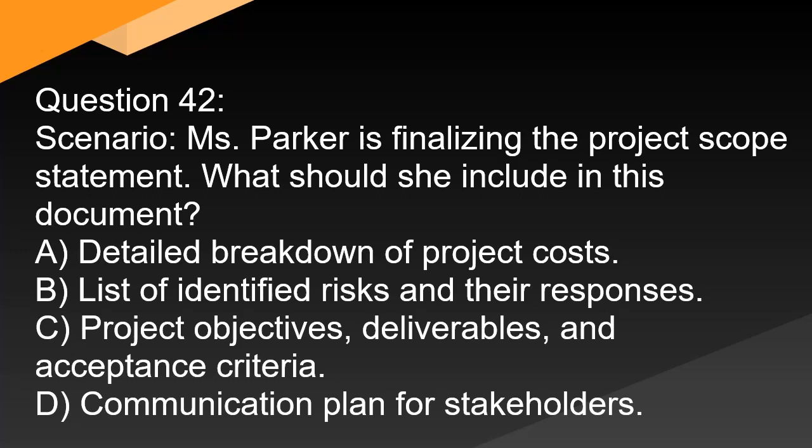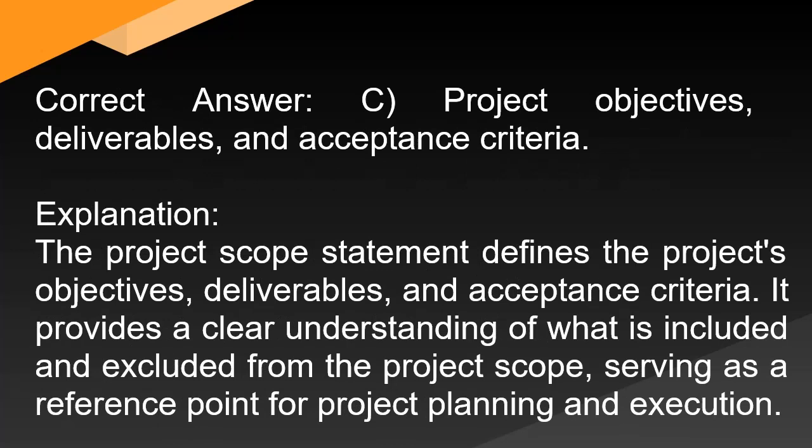Question 42: Ms. Parker is finalizing the project scope statement. What should she include in this document? A. Detailed breakdown of project costs. B. List of identified risks and their responses. C. Project objectives, deliverables, and acceptance criteria. D. Communication plan for stakeholders. Correct answer: C. Project objectives, deliverables, and acceptance criteria. Explanation: The project scope statement defines the project's objectives, deliverables, and acceptance criteria. It provides a clear understanding of what is included and excluded from the project scope, serving as a reference point for project planning and execution.